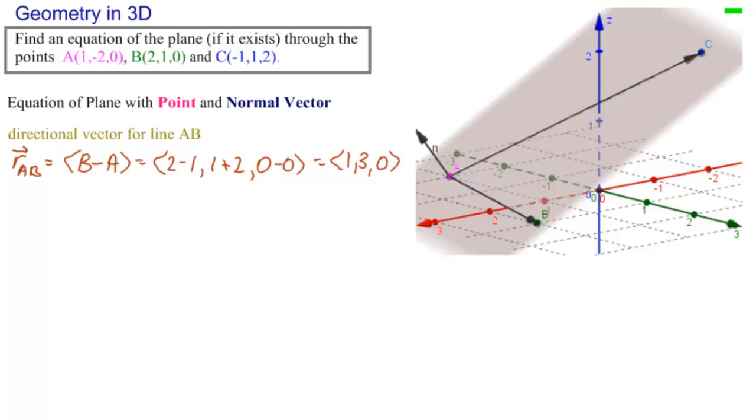And we need a directional vector for AC. So AC equal to C minus A is equal to minus 1 minus 1, 1 plus 2, and 2 minus 0, or minus 2, 3, 2.